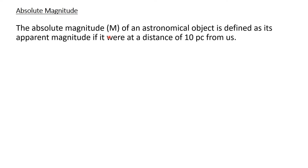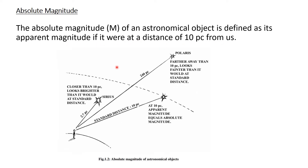The absolute magnitude, denoted by capital M, of an astronomical object is defined as its apparent magnitude if it were at a distance of 10 parsecs. You can easily understand this from the figure. If we want to calculate the absolute magnitude of a star, we arbitrarily bring that star to a distance of 10 parsecs, then measure its apparent magnitude — that apparent magnitude is its absolute magnitude.